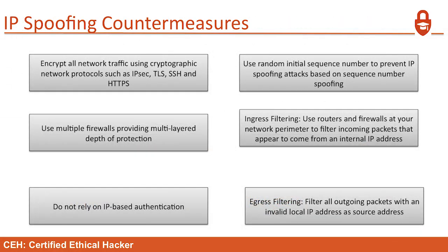Countermeasures: encrypt all network traffic using cryptographic network protocols such as IPSec, TLS, SSH, and HTTPS — notably SSL is no longer listed here. Use multiple firewalls providing multilayered depth of protection. Do not rely on IP-based authentication. Use random initial sequence numbers — almost everything does this automatically today — to prevent IP spoofing attacks based on sequence number spoofing. If I start a connection, it might start at 50; the next connection might start at 6,000 instead of 55, so you can't guess the sequence number.